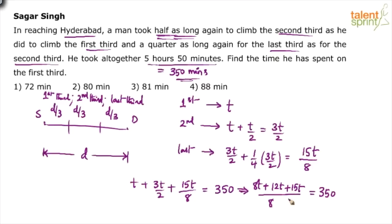So 8 plus 12 plus 15, 8 plus 12, 20, 15, 35. Done. 35 goes 10 times. T will be 10 into 8, 80. So 80 minutes. Time is 80 minutes.